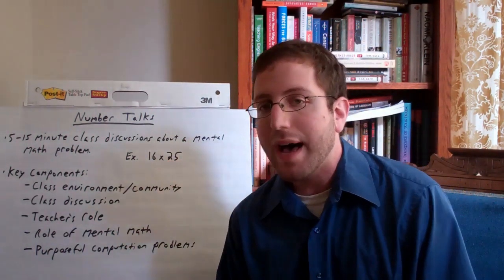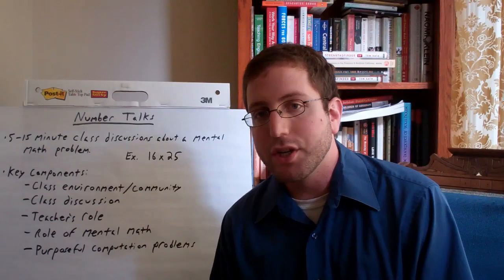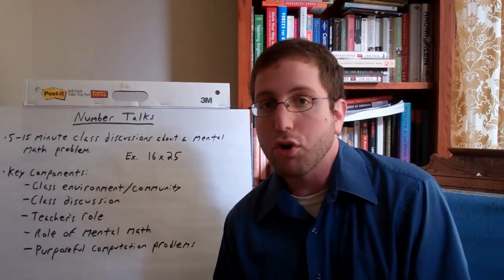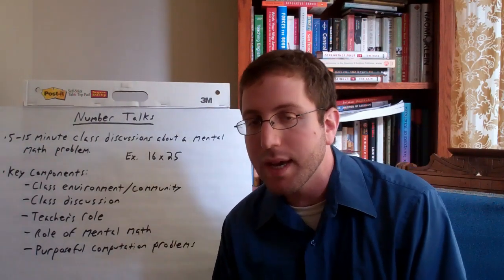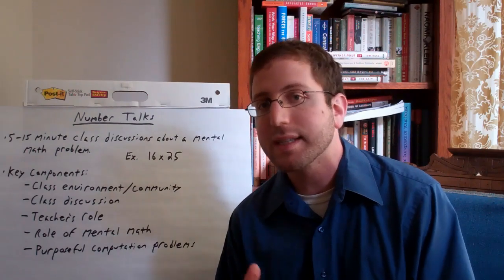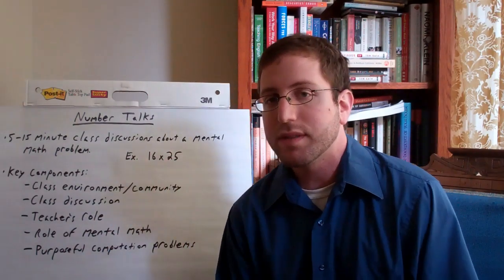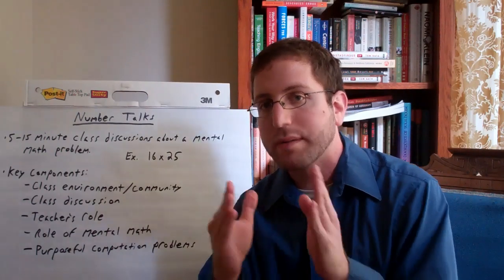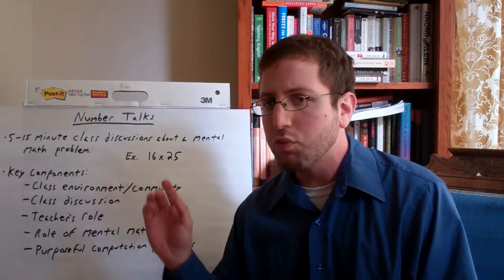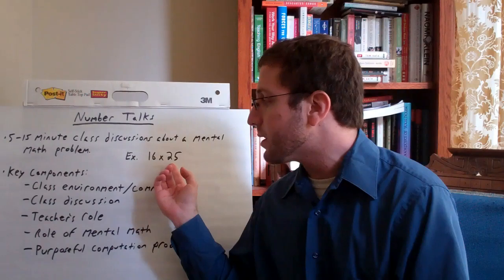And so, for example, 16 times 25, you could use a lot of different strategies to try to solve that. You could use partial products by having them be 10 times 25 plus 6 times 25. You can break it down into different factors. So, instead of 16 times 25, do 4 times 4 times 25. There's a rich number of ways you could solve this.